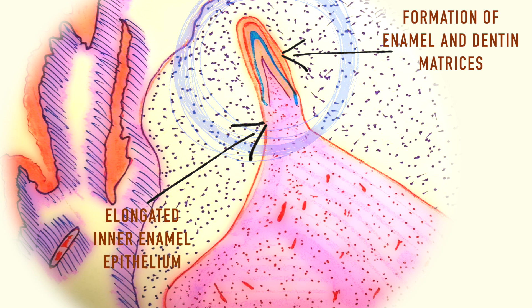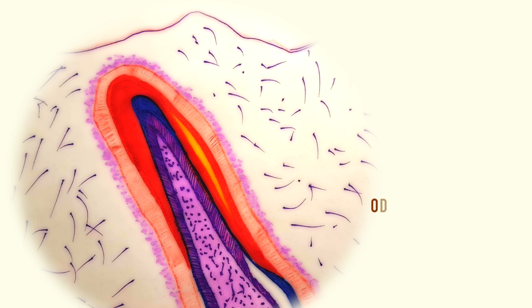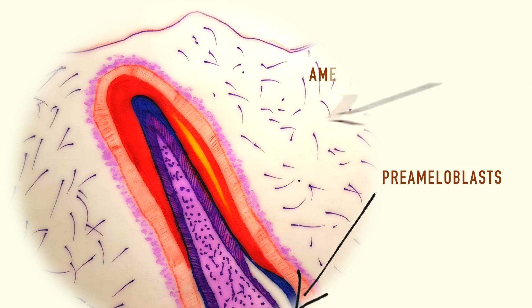The elongation of the inner enamel epithelium will enhance the formation of the odontoblasts, which also elongate and move down, leaving behind the dentin matrix. Then the elongated pre-ameloblast cells will turn into ameloblasts, moving up and leaving the enamel matrix.